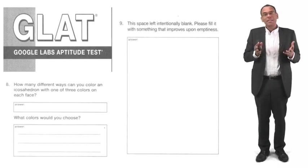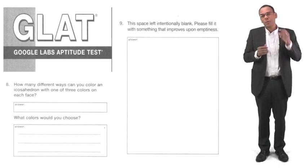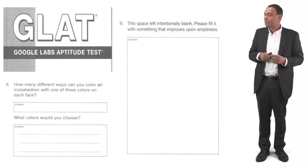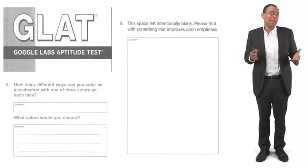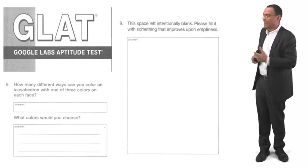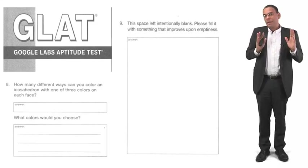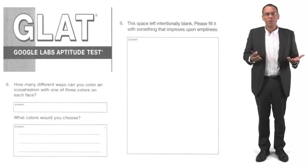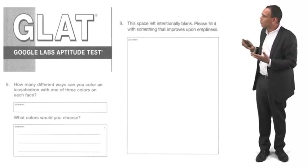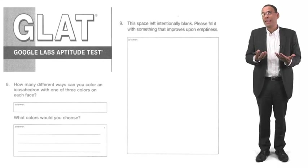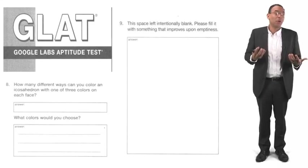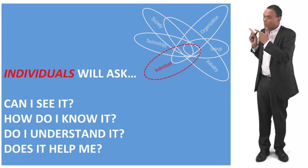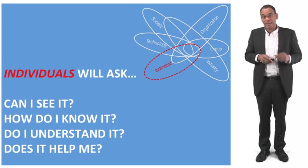Look at question number eight: 'How many different ways can you color an icosahedron with one of three colors on each face?' What kind of question is that? How is that a creative question? What colors would you choose — maybe that's creative. And look at question number nine: the space is left intentionally blank — please fill it with something that proves upon emptiness. What do you put there? How are these kinds of questions something that could lead us to understand how to have better ideas and be more creative? Because innovation starts with the idea, and we're going to map this kind of thinking into creative ideas.